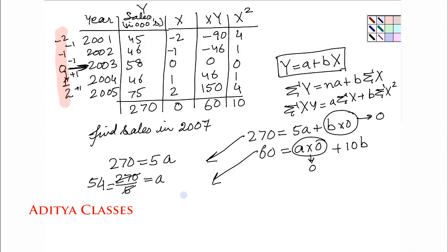When we try to solve the second equation, sigma xy is 60 equals a sigma x plus b sigma x square. We have 60 equals, this term goes away because it is 0, 10b. So b comes out as 60 upon 10, that is 6.